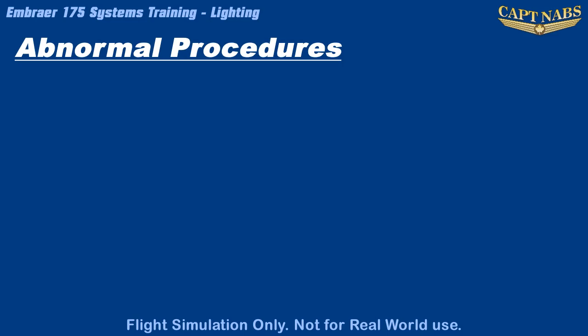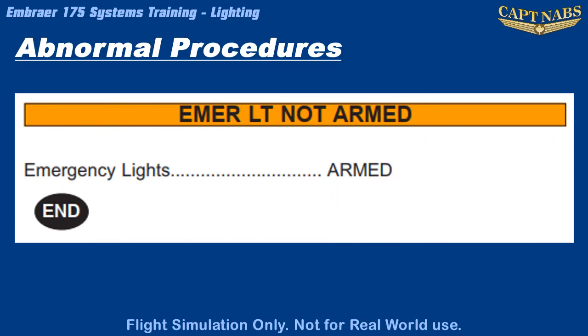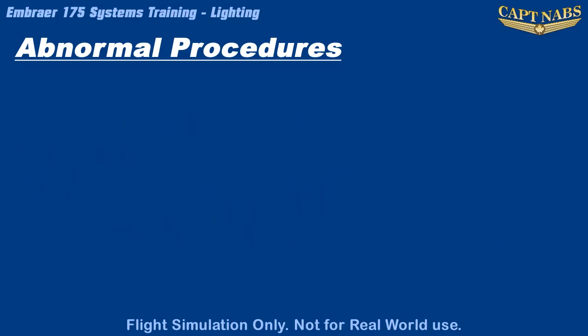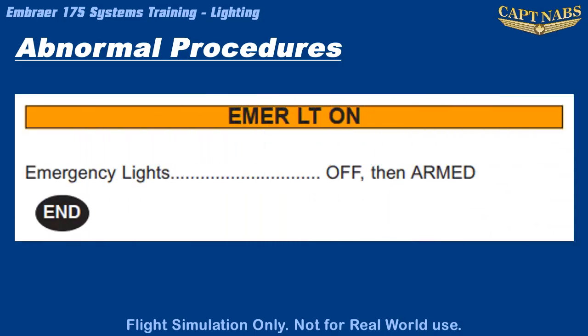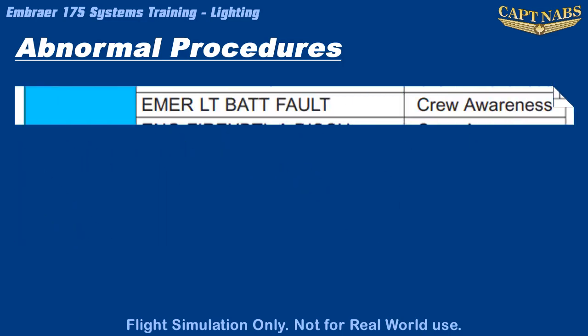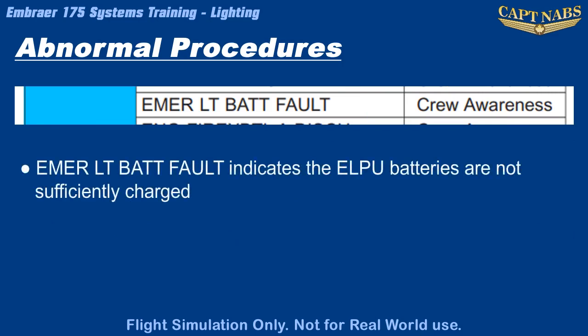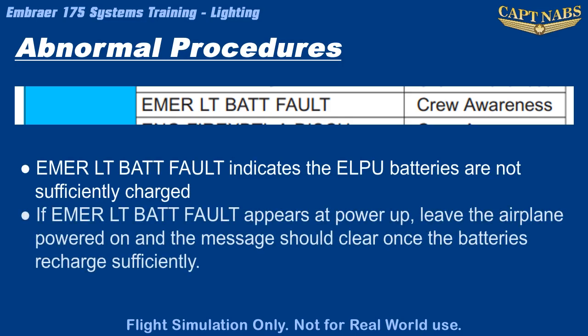There are only a few EICAS messages related to the lighting system, and they all relate to the emergency lights. If EMER LIGHT NOT ARMED appears unintentionally, ensure the emergency light switch is switched to the armed position. If EMER LIGHT ON appears unintentionally, turn the emergency light switch off and back to arm. If EMER LIGHT BAT FAULT appears, this is for crew awareness only — it indicates the batteries are not sufficiently charged. If this appears at power-up, it will usually disappear once the emergency light batteries have recharged slightly.